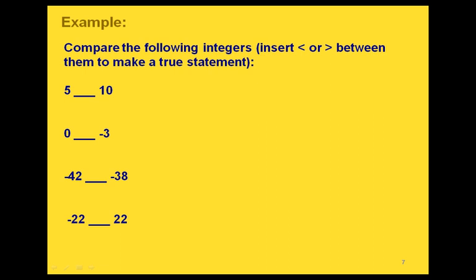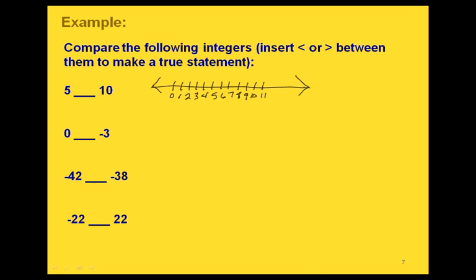Here are some examples — let's compare these integers by writing in a less than or greater than symbol between each pair. If we graph 5 and 10 on a number line, we put enough values so we can see both numbers. Looking at the numbers between 0 and 11: 5 is to the left of 10, which means 5 is less than 10.